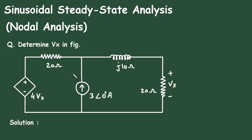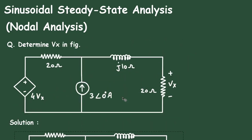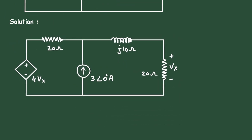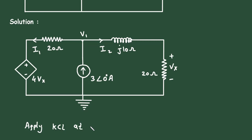Solution: first of all, we will take this circuit. Now let us assume this as a reference node. This node, let us say, is node V1. Let us assume all the currents towards the reference node — this is current I1 and this is current I2. Now we will apply KCL at node V1.